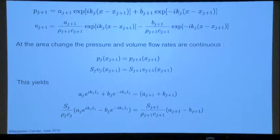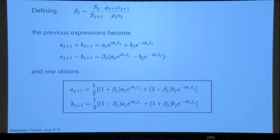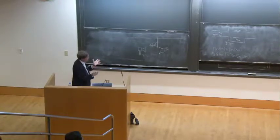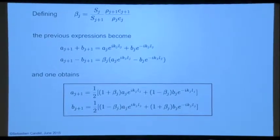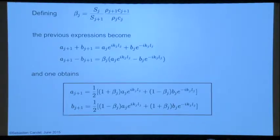With these matching conditions, you can match the waves from one section to the next through a bit of algebra. You get the amplitudes in duct j+1 in terms of duct j. This also handles changes in density and speed of sound due to, for example, temperature or a flame.